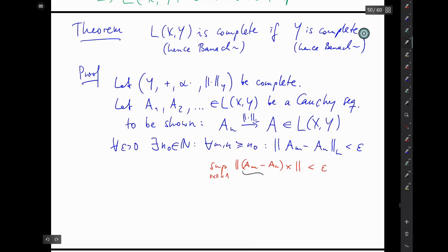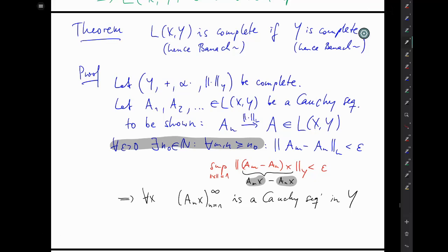Let's spell out what this operator norm is. It's the supremum of all X's with norm equal to 1 of A_M minus A_N applied to X, less than epsilon. This can be rewritten as A_M(X) minus A_N(X). If you read this from the top, it says that your sequence A_N(X) is a Cauchy sequence in Y, because here is the Y norm, and that holds for every X with norm equal to 1. That's exactly why completeness of Y is crucial here.